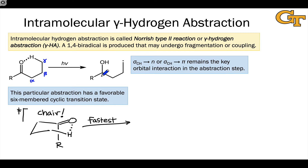The resulting diradical is a 1,4-diradical with two carbon-centered radicals separated by two intervening carbon atoms. In terms of digging deeper into this reaction, we're interested in the effect of spin multiplicity — singlet versus triplet — on the reaction outcome, the effect of the electron configuration of the excited state (n-π* versus π-π*), and how reaction conditions such as solvent and temperature affect the outcome.